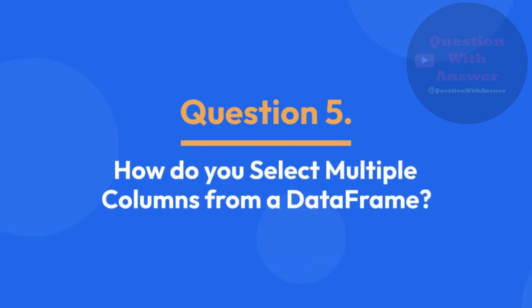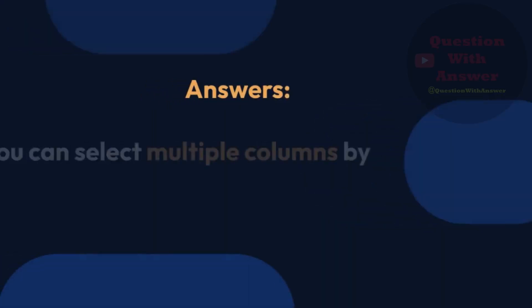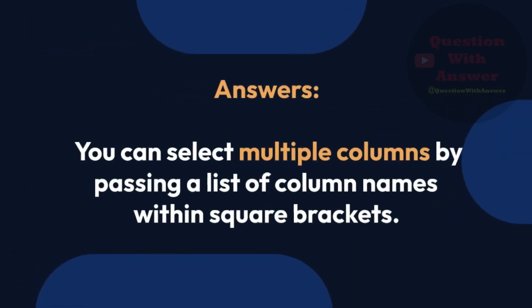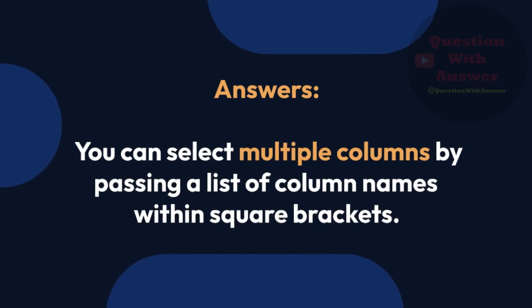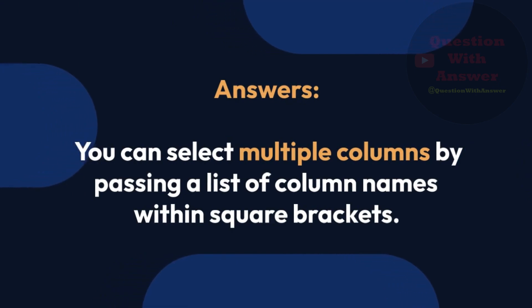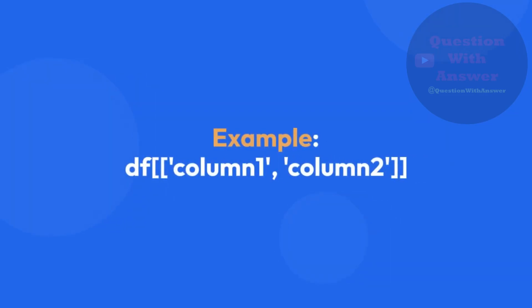Question 5: How do you select multiple columns from a DataFrame? You can select multiple columns by passing a list of column names within square brackets. This is the example of how you can select multiple columns from a DataFrame.